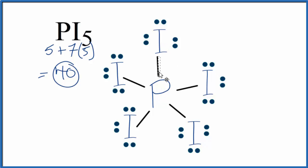I put a pair of electrons between each iodine and the phosphorus atom. This bond represents two valence electrons, a single bond. Phosphorus can have more than eight valence electrons. We have 2, 4, 6, 8, 10, so that's okay.